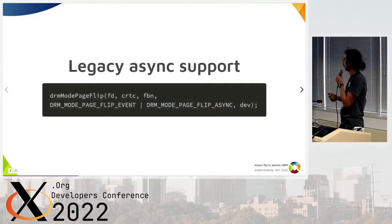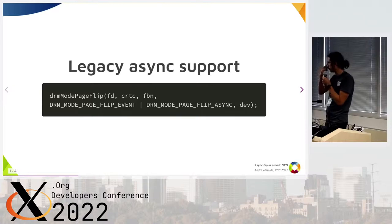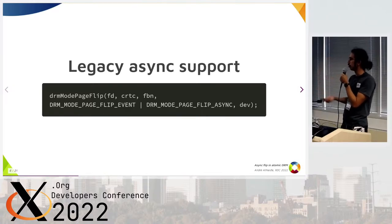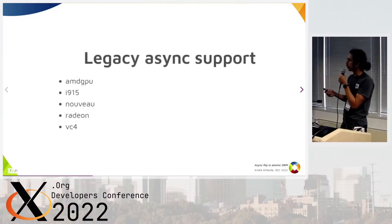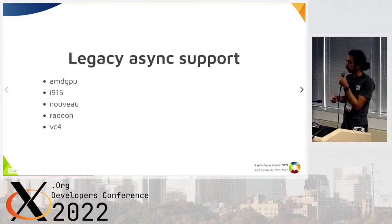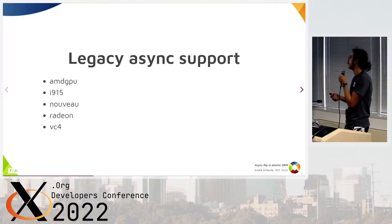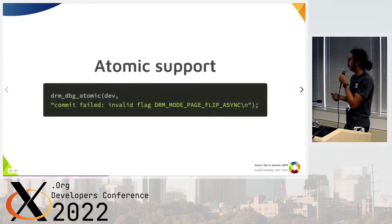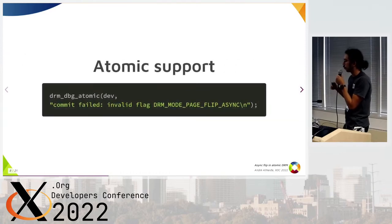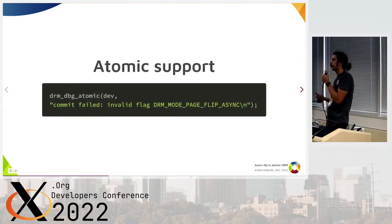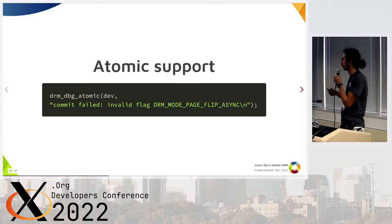We can do this async page flip on the legacy DRM API — you just need to use a specific flag on supported drivers, and we have a bunch of drivers that can do that. But on the atomic DRM API, we couldn't do that so far. You get an error if you try to do that.